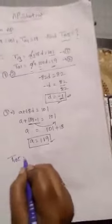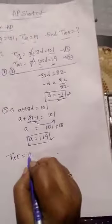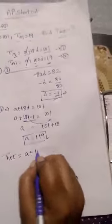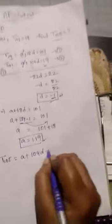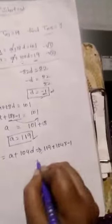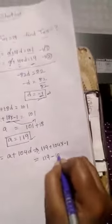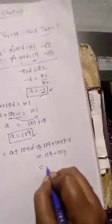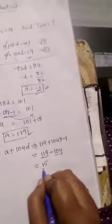So T105 equal to A plus 105 minus 1, 104D. Which is equal to A value 119 plus 104 into D is minus 1. So 119 minus 104. Answer is 119 minus 104, 15. 15 is the answer.